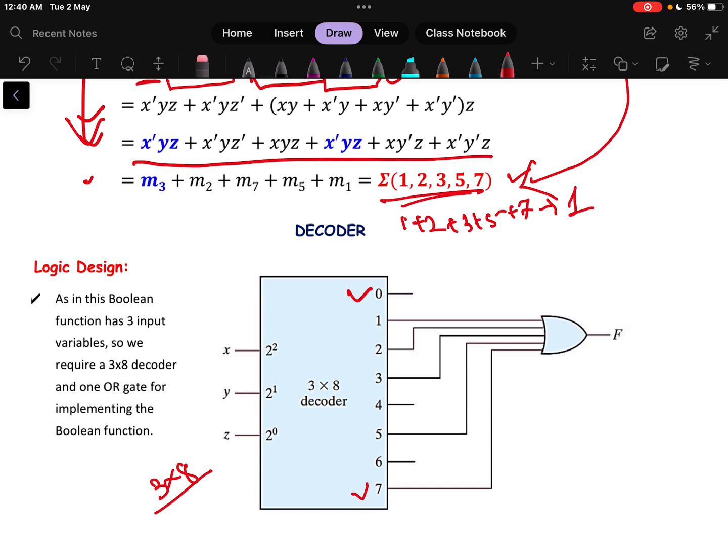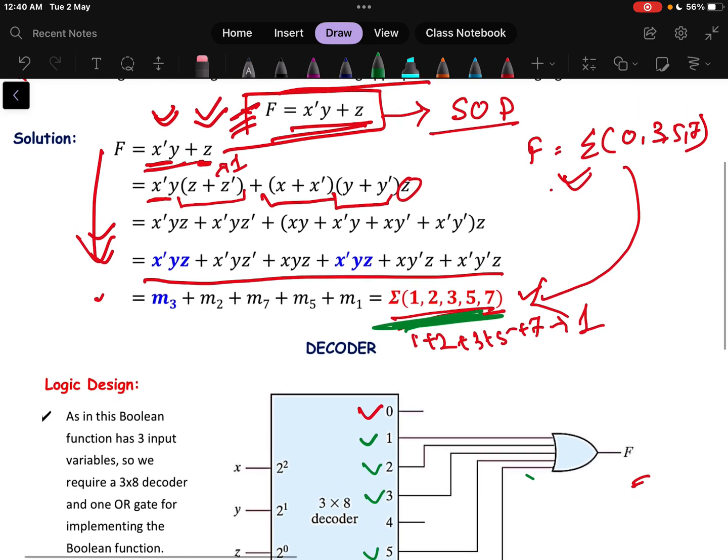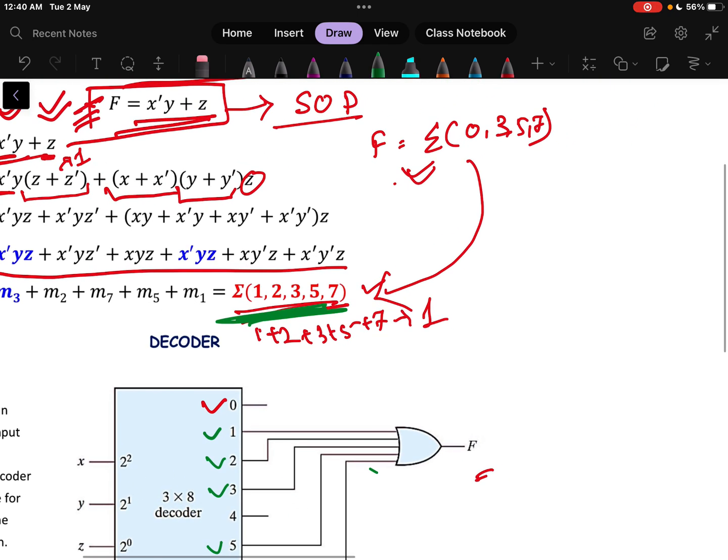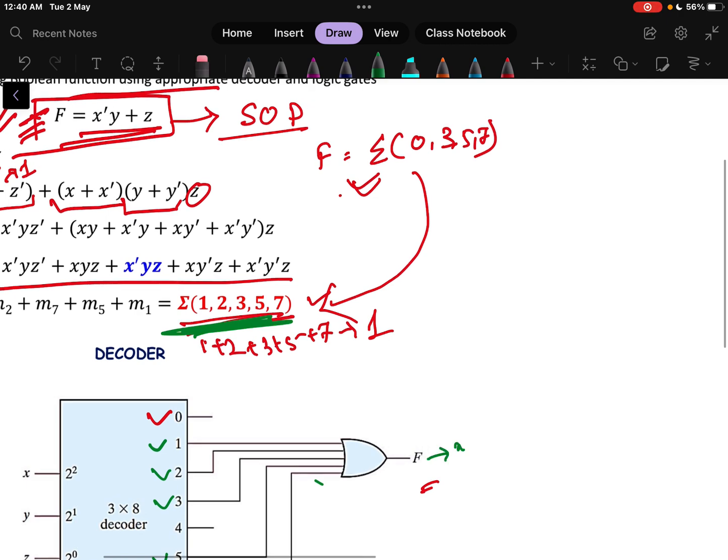What is my value of the function value? Function value is 1, 2, 3, 5, 7. So 1, 2, 3, 5 and 7 all are connected through an OR gate and this will give me the required Boolean expression that is x dash y plus z.